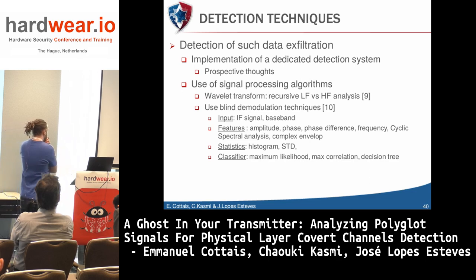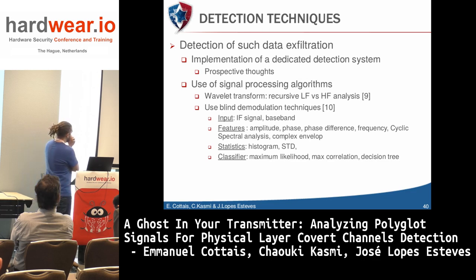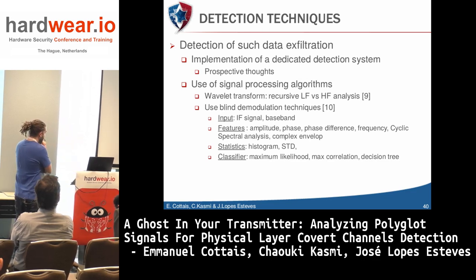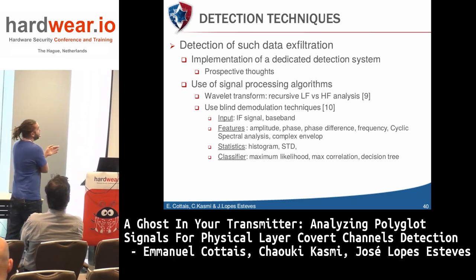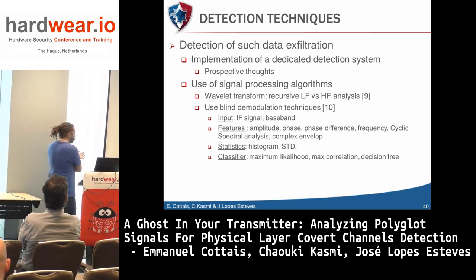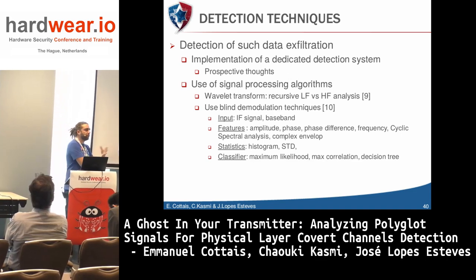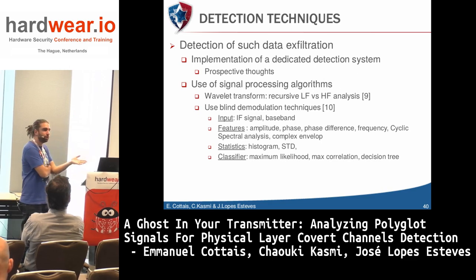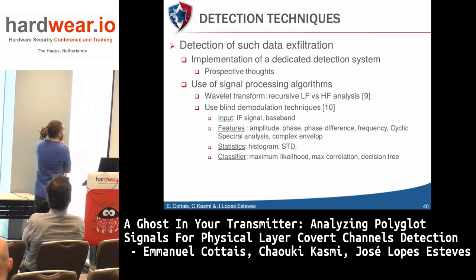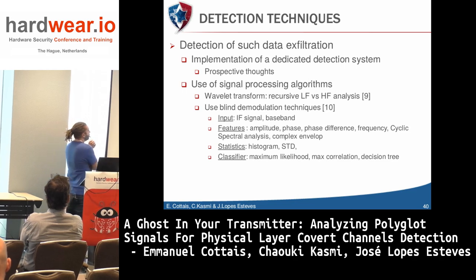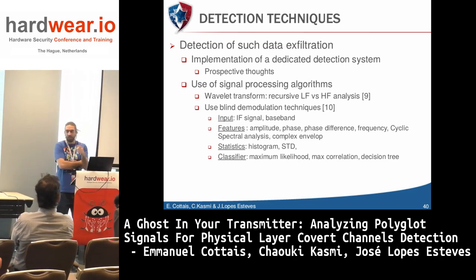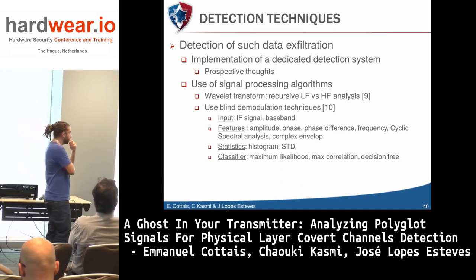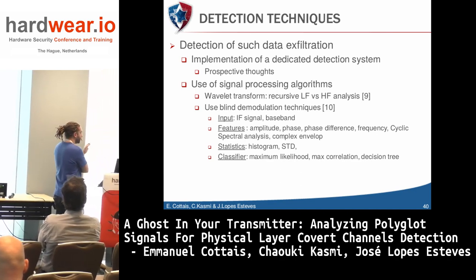Some ideas: using Wavelet Transform and Blind Demodulation techniques — especially since you know the legitimate protocol, you can use modulation classification techniques to identify the probability of the legitimate modulation. If you do statistics on that probability, you could detect when covert communication is going on.